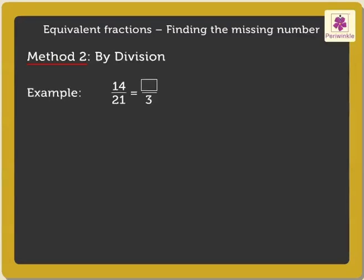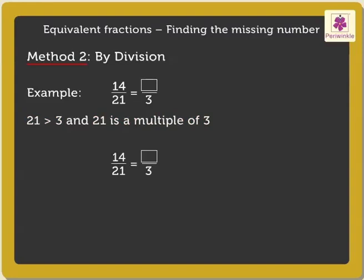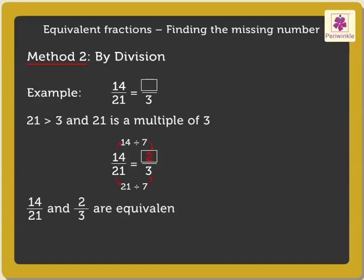Method 2 by Division: Find the missing number in the given pair of equivalent fractions. Here also, we look at the denominators of both fractions. 21 is greater than and a multiple of 3. Here, the smaller number is the denominator of the missing numerator. Hence, we have to find the number by which when 21 is divided gives the answer 3. 21 divided by 7 gives 3. So, to find the missing number, we divide the numerator 14 also by 7 and get the answer as 2. Thus, 14 upon 21 and 2 upon 3 are the given equivalent fractions.